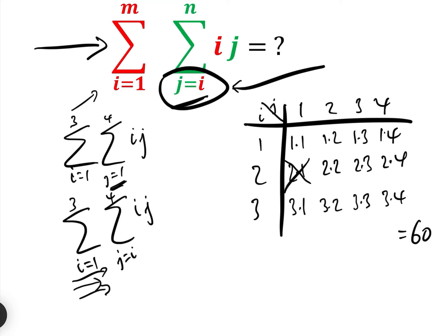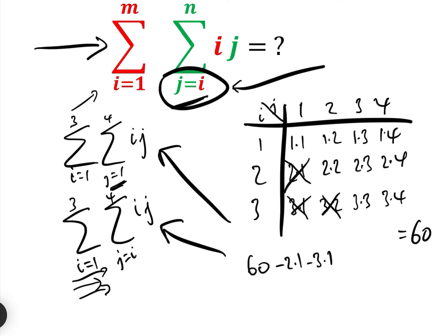And then when i goes through for the third time, that goes from j equals 3 to 4, which means we don't include the 3 times 1 or 3 times 2 terms either. So basically the sum of that one will be 60 — the sum of the original — take away 2 times 1, take away 3 times 1, take away 3 times 2, which equals 49.